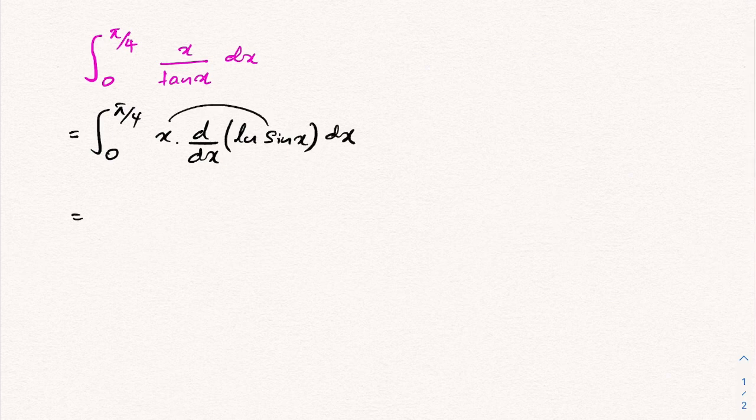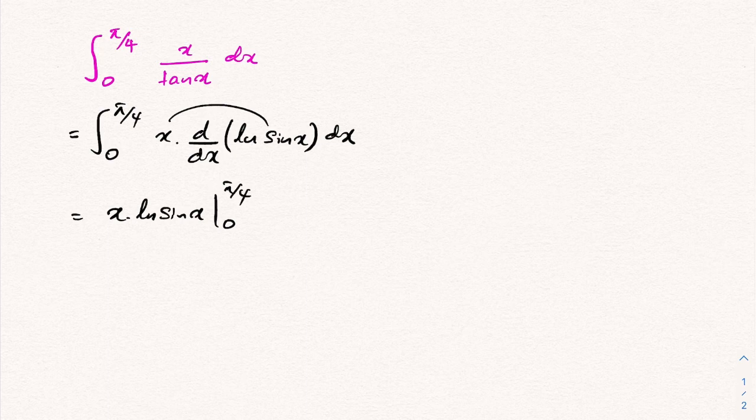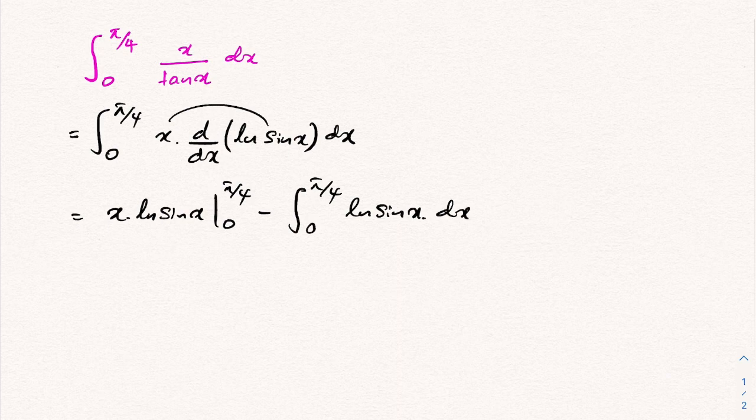We have the product of these two functions: x times natural log of sine of x from 0 to pi over 4, minus integral from 0 to pi over 4, natural log of sine of x times derivative of x, which is 1, so we have dx.